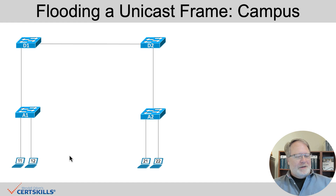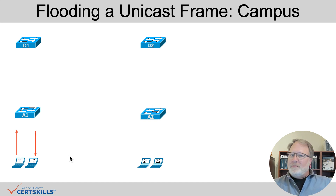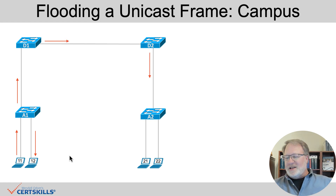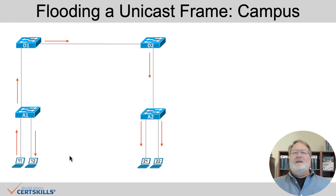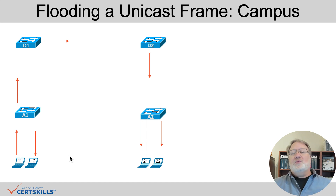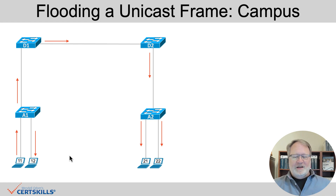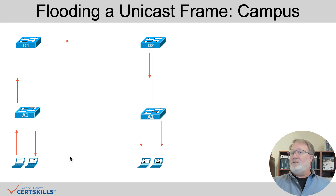Walking through another example: PC11 at the bottom left sends a frame. Switch A1 doesn't match the destination address, so it floods out the bottom-right port and up to Switch D1. D1 doesn't know the MAC address, D2 doesn't know it, A2 doesn't know it, so it forwards down to the other two. Why is that a good thing? Let's say the frame was really meant for PC22 — if PC22 is up and working, it gets a copy and can reply, and we'll talk about MAC table learning shortly. In the future, forwarding will be much more efficient. The other PCs that don't need the frame simply discard it, so the host logic helps flooding work while everyone else ignores frames not meant for them.